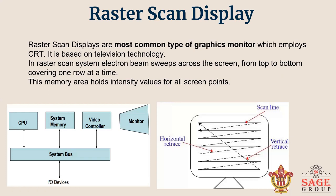The picture definition is stored in a memory area called the refresh buffer or frame buffer. This memory area holds the set of intensity values for the screen points. The intensity values are retrieved from the refresh buffer and painted on the screen one row, or scan line, at a time.